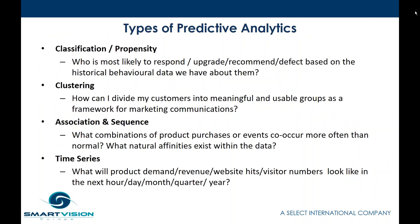When we talk about predictive analytics, we break it down into families of techniques. The one we're focusing on today is classification or propensity modeling — who is most likely to upgrade, recommend a product, or defect (i.e., churn) based on their historical behaviour. Classification propensity could also include who's most likely to claim on an insurance policy, likely to renew, or a system that is likely to fail — essentially any key outcome we wish to estimate.